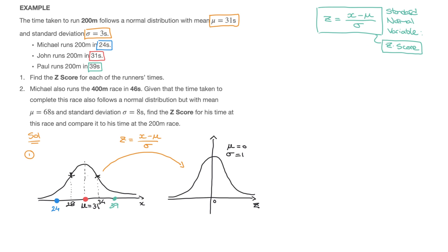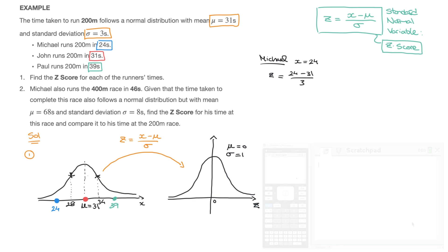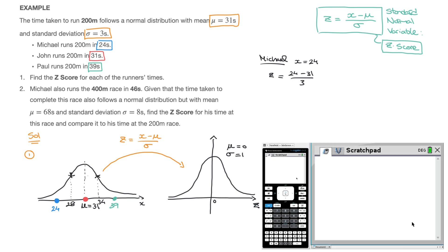Let's use this formula to calculate the z-score for Michael. In Michael's case, he ran it in 24 seconds, so x equals 24. Replacing x by 24, mu by 31, and sigma by 3, we get z equals 24 minus 31 over 3. Entering that into the calculator — open parentheses, 24 minus 31, close parentheses, divide by 3 — and rounding to three significant figures, Michael's z-score is z equals negative 2.33.